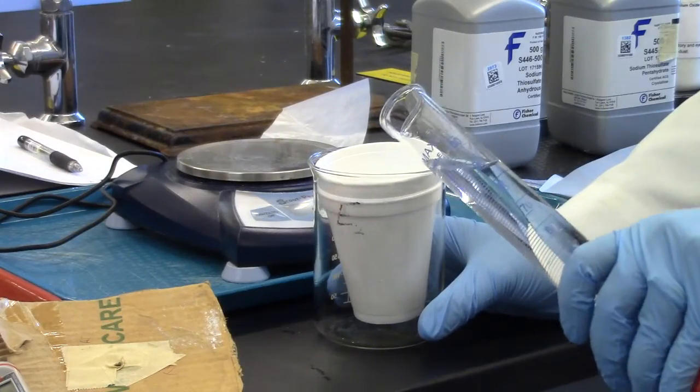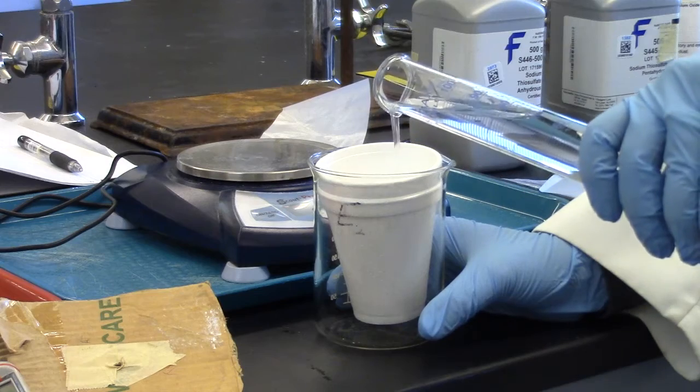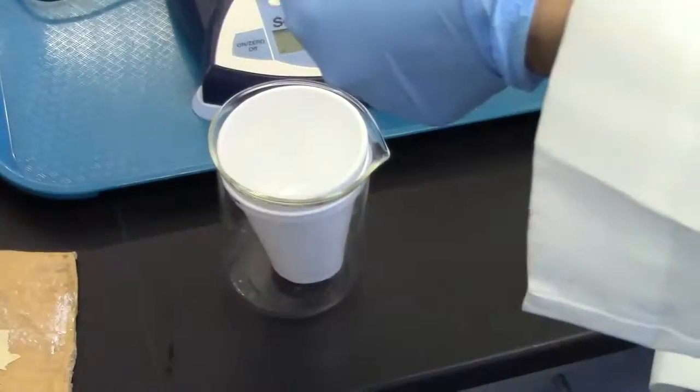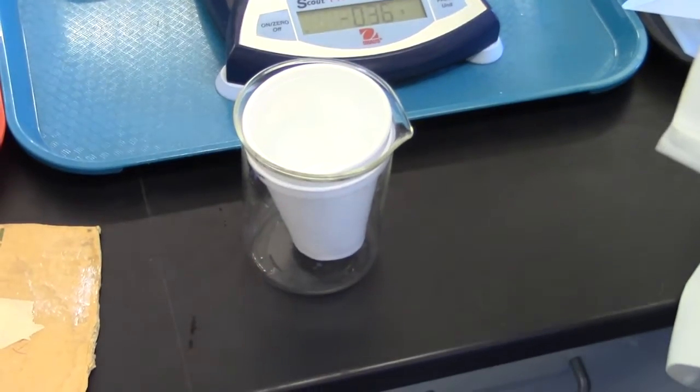Pour hydrochloric acid into calorimeter and take initial temperature. Add magnesium strip to hydrochloric acid.